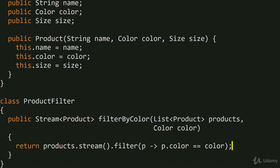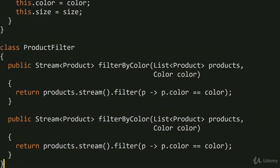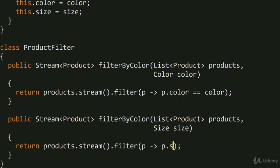Suppose we write this code and push it to production, but then the boss comes back and says we also want to filter products by size. So you start doing copy-paste programming — you copy the filterByColor method, paste it, and instead of color you're now taking size as a criterion, checking that p.size equals size.